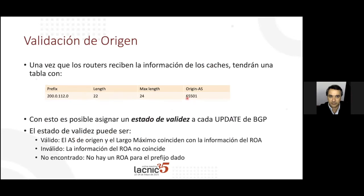Once routers receive information from the caches, they will have tables with prefix, length, maximum disaggregation length, and origin autonomous system. This provides a validity state for each BGP update: if the origin AS matches and the maximum length matches, the update is valid. If either doesn't coincide but an ROA exists, it's invalid. The third situation is when no ROA has been created — that's the 'not found' state. The different possibilities are valid, invalid, or not found.